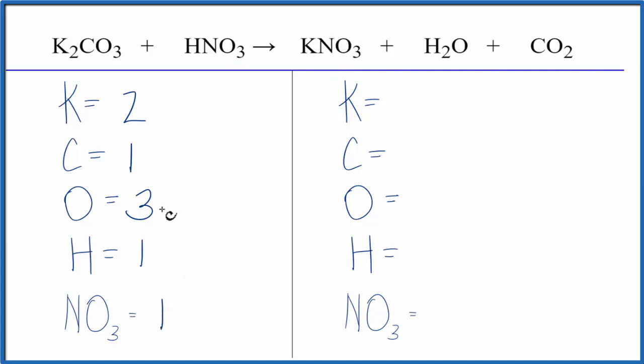That way I'll know which oxygens I really need to concentrate on when I balance later. On the product side, one potassium, carbons one, oxygens, we have one here, plus we have these two, and I'm going to ignore these. That gives me three.